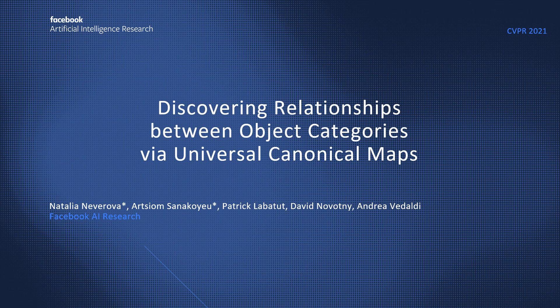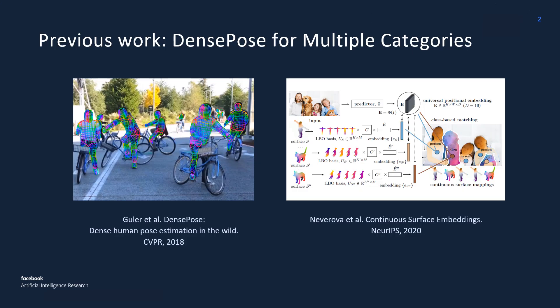We present our CVPR 2021 paper called Discovering Relationships Between Object Categories via Universal Canonical Maps. In this work, we tackle the problem of learning the geometry of multiple categories of deformable objects jointly from images.